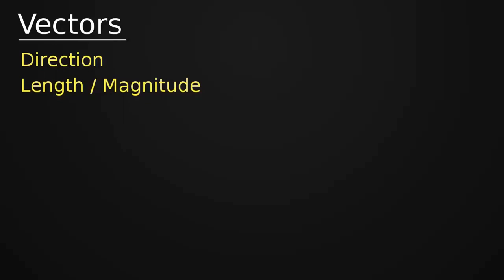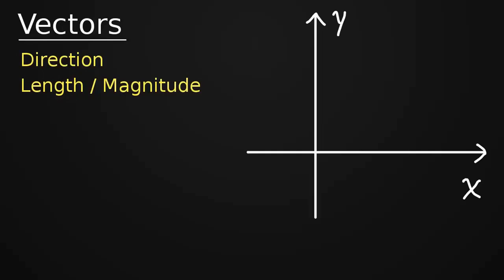Length is a very physical, visual concept. It's something we can see, it's something we can measure. And the same with direction — it's our orientation, it's a very visual thing. So vectors, most intuitively, fit on a graph. They fit in a place where we can visualize them.